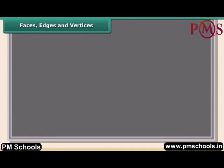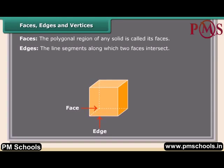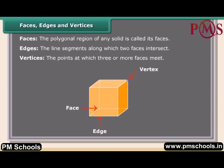Faces, edges, and vertices: the polygonal region of any solid is called its face. Edges are the line segments along which two faces intersect. Vertices are the points at which three or more faces meet.